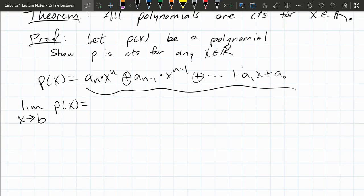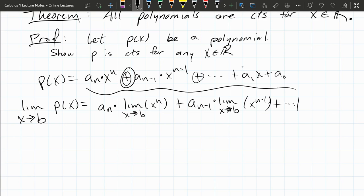So that means the first one can be written as a_n times the limit as x approaches b of x^n, plus a_{n-1} times the limit as x approaches b of x^{n-1}, plus dot dot dot, plus...